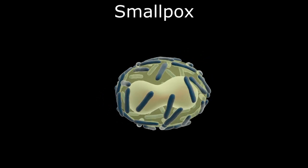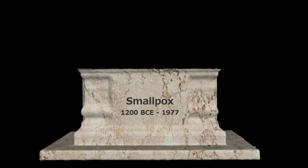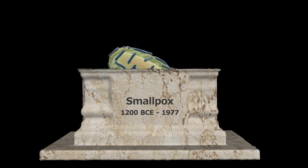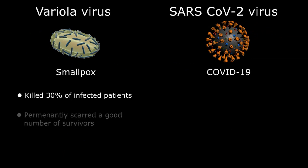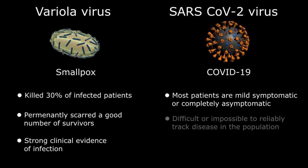Finally, keep in mind that smallpox is the only virus that mankind has completely eradicated from the population, and it took a very long time. Smallpox killed 30 percent of its victims and permanently scarred many survivors, making it clinically quite evident when someone was infected. On the other hand, the vast majority of patients with a SARS-CoV-2 infection are either mildly symptomatic or completely asymptomatic, making it difficult or impossible to reliably track disease in the general population.